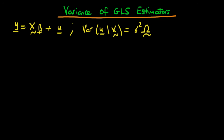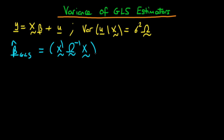In this video I'm going to derive the variance of GLS estimators. Previously we assumed a linear model y = Xβ + u, where the variance is given by σ² times some diagonal matrix Ω, which crucially isn't the identity matrix. In deriving a BLUE estimator, we derived an explicit form of the GLS estimator: (X'Ω⁻¹X)⁻¹ X'Ω⁻¹y.